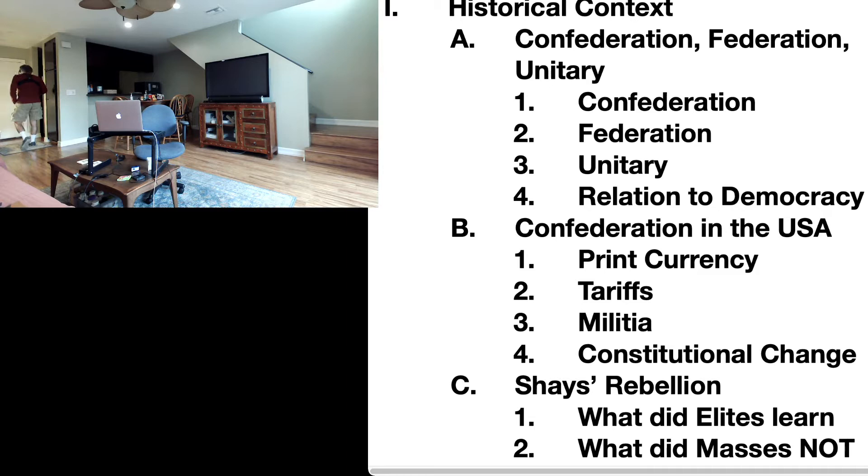Number one: States had the power to print currency. Some states were deeply in debt, so they overprinted currency to reduce their debt load.